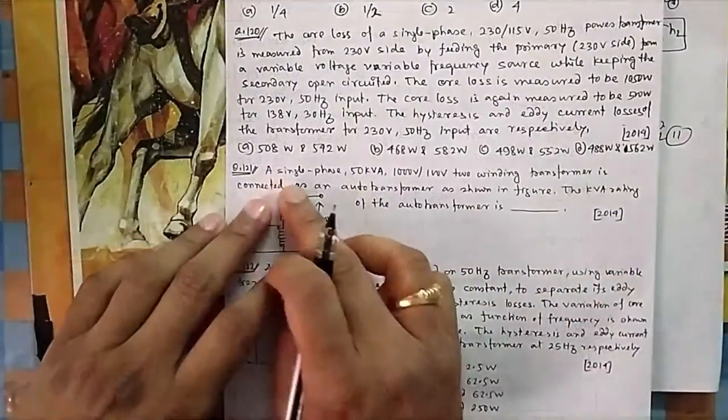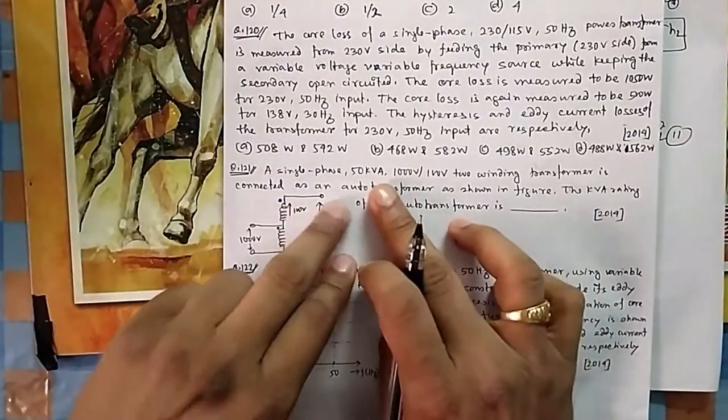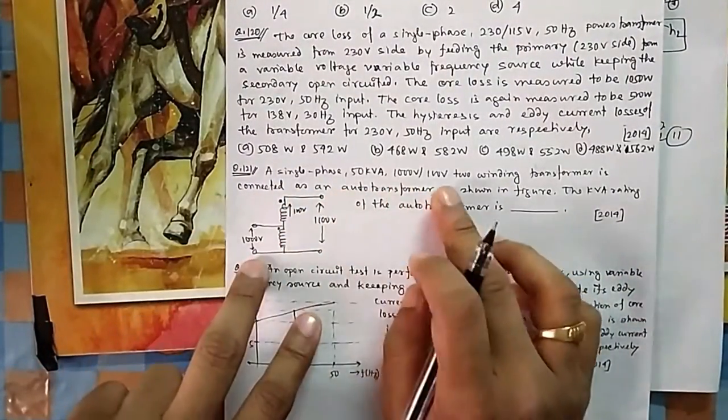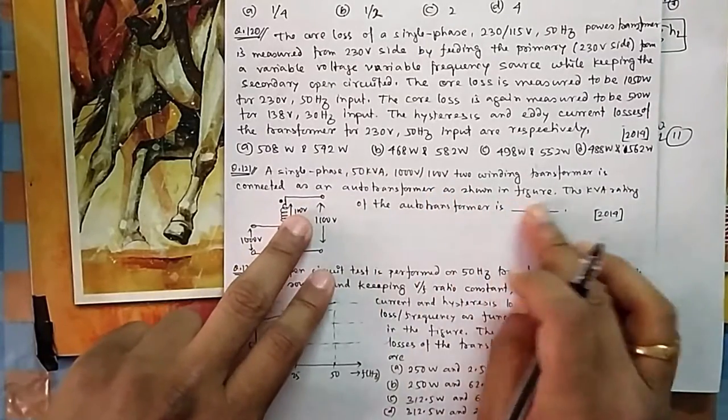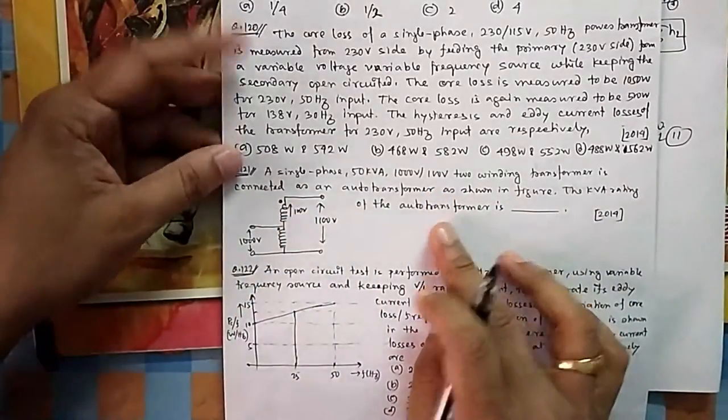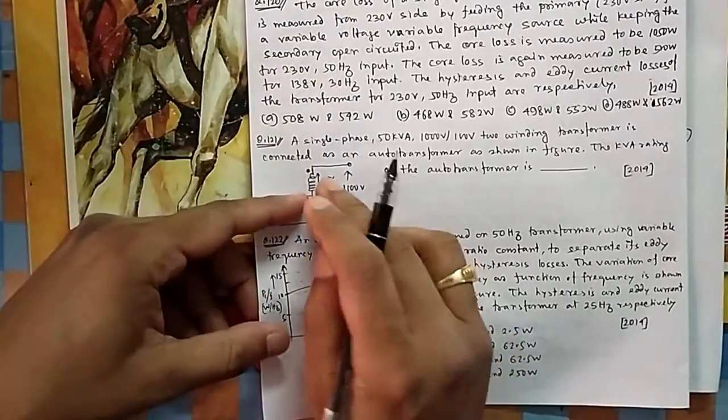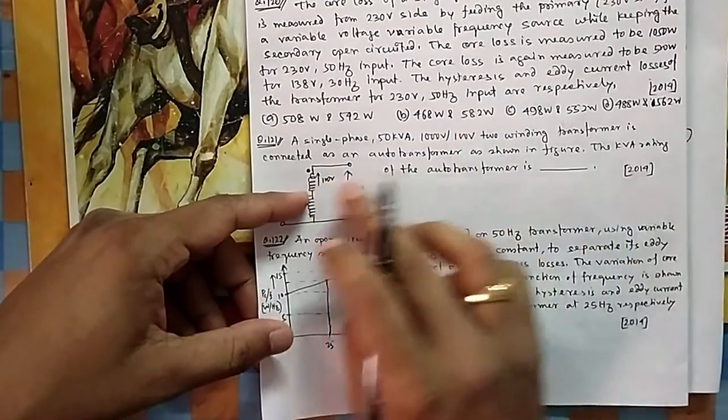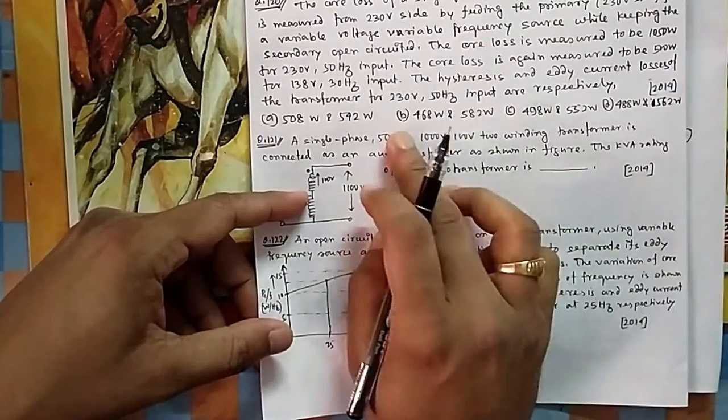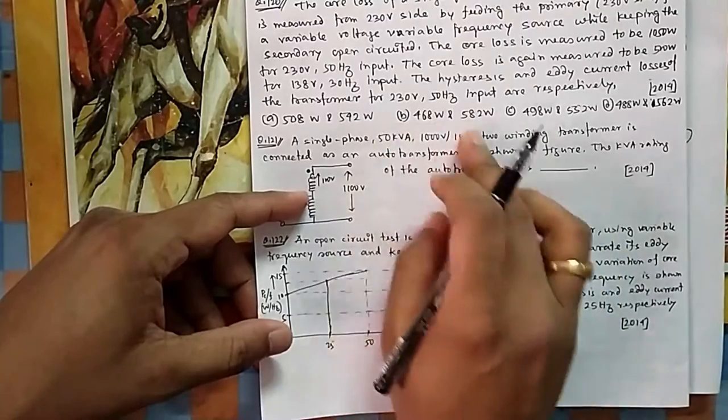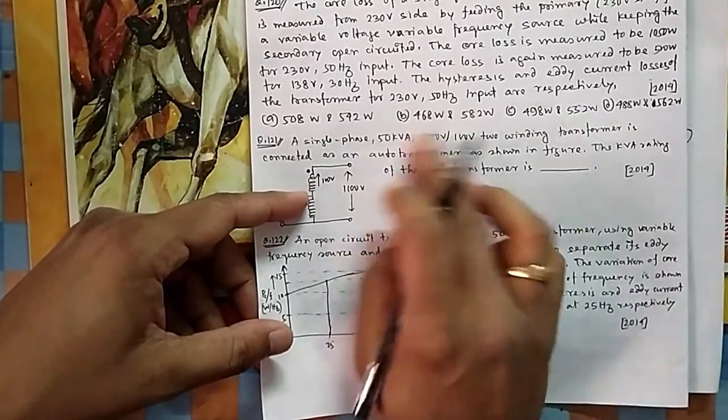Let's try to solve these five questions. Question number 121: A single-phase 50 Hz, 50 kVA, 1000 by 100 two-winding transformer is connected as an auto-transformer. The kVA rating - we have done it so many times. You find the maximum current that can flow through this 100 volt, because this 100 volt is coming from this transformer, so we have designed this one to carry this rating.